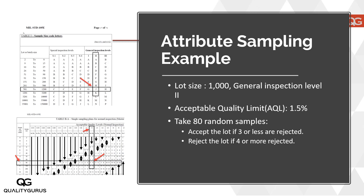The question is: I have a lot size of 1000 pieces from my supplier. We have decided that the inspection level will be 2, and the acceptable quality limit is 1.5%. We take 80 samples out of the 1000 pieces, check them, and see whether those are acceptable or rejectable.